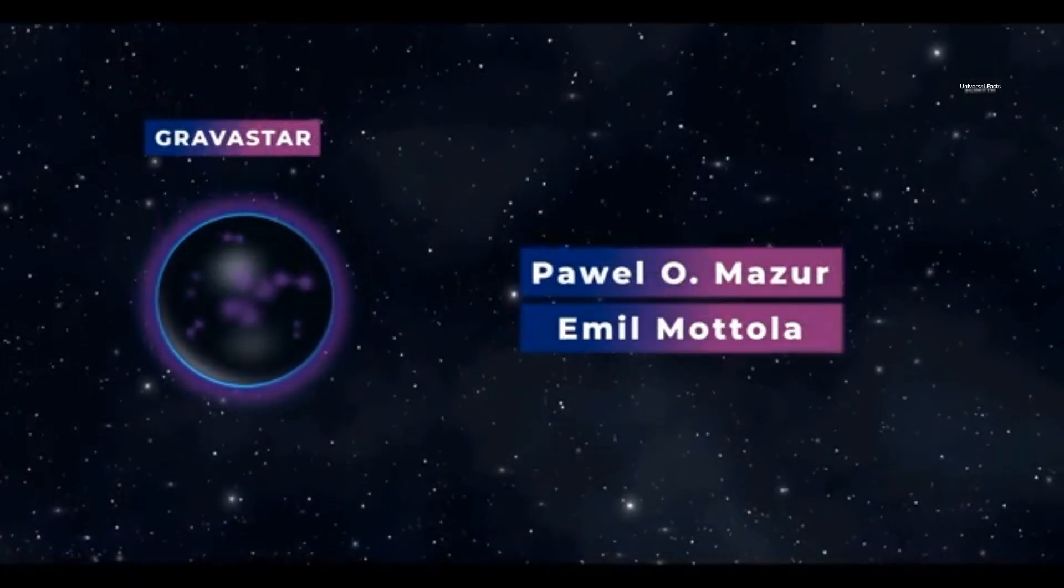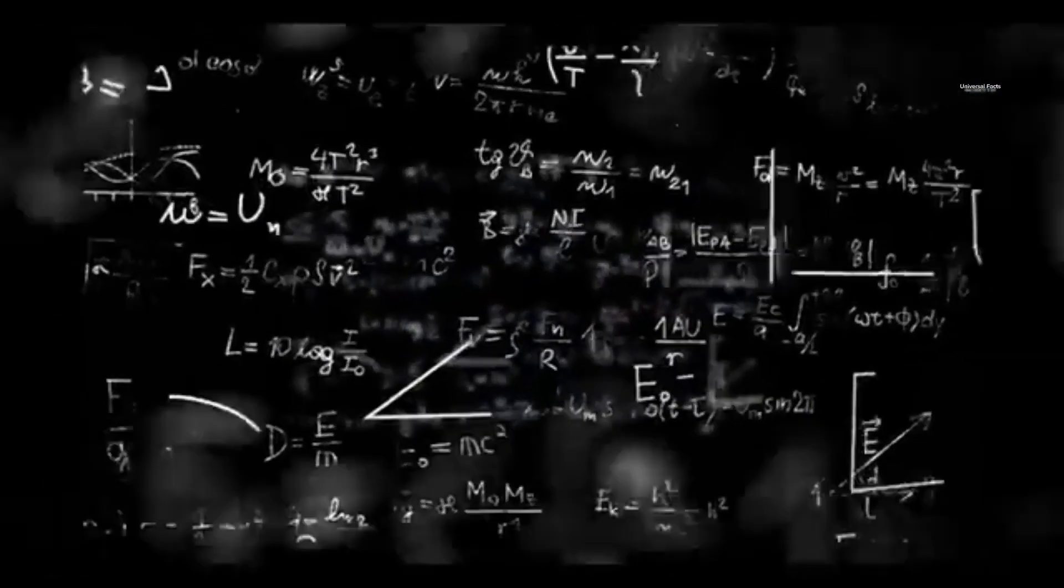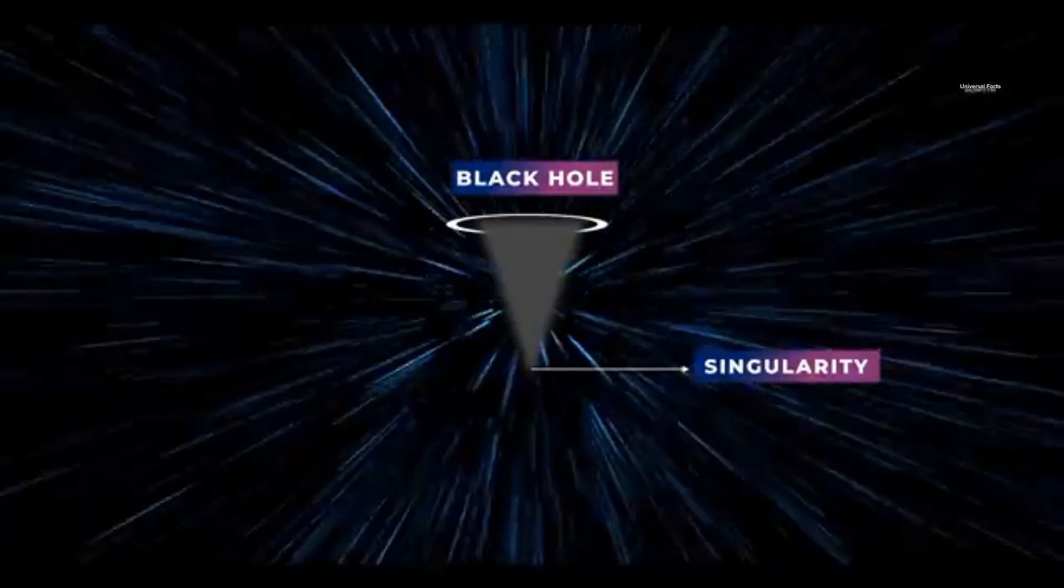Gravistars were first introduced in 2001 by two physicists, Pawel O. Mazur and Emil Mottola. These scientists were working on Einstein's equations and sought an alternative to singularity in physics.